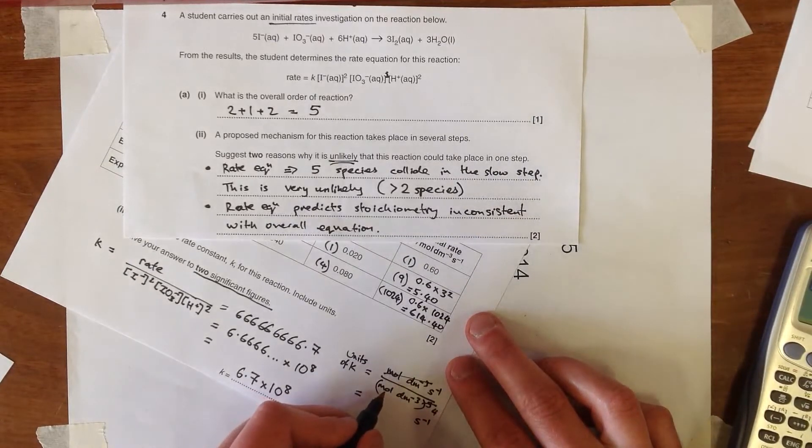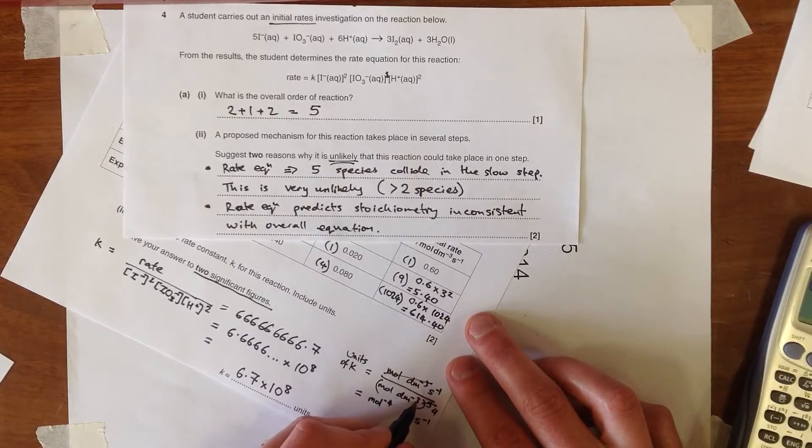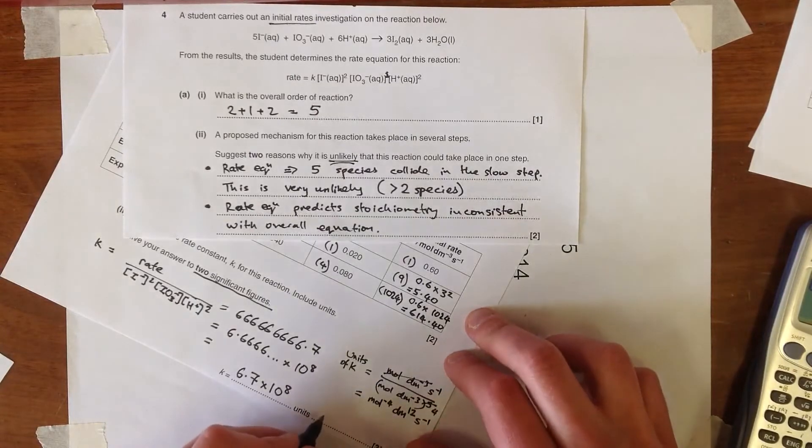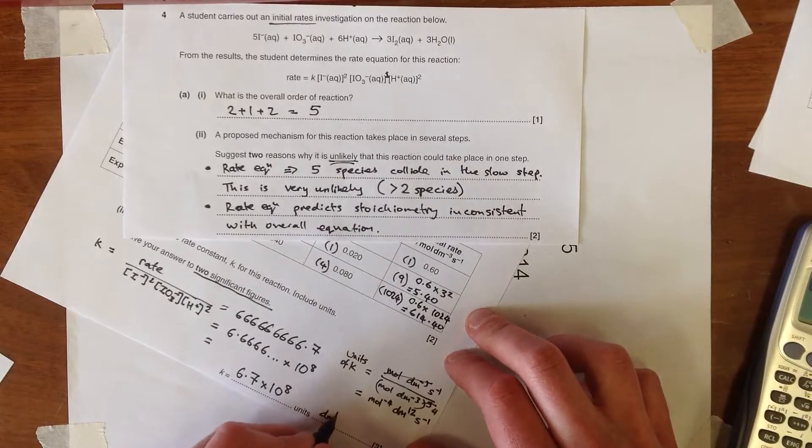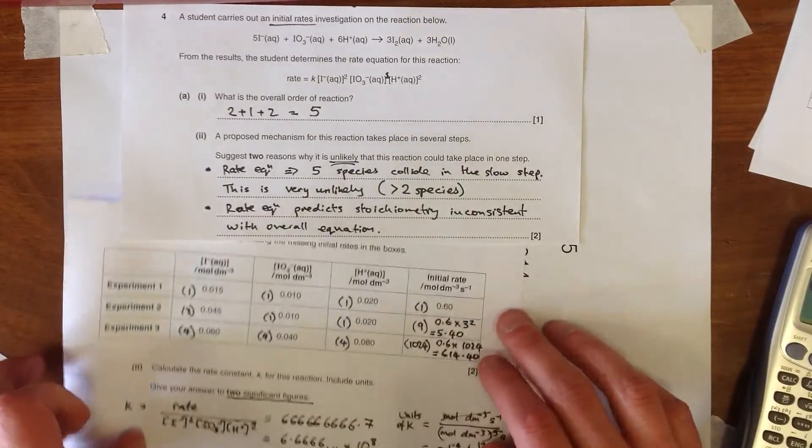But now we need to do one divided by mole to the 4, which is mole to the minus 4. One divided by mole to the minus 12, or dm to the 12, sorry, dm to the minus 12, which is dm to the 12. And so we can write that as decimetres to the 12 mole to the minus 4 seconds to the minus 1. So there is our value for k.